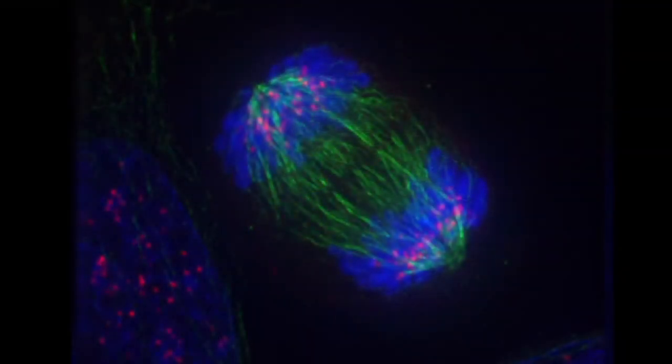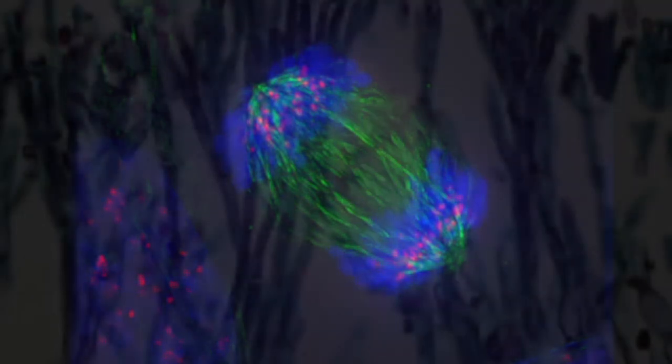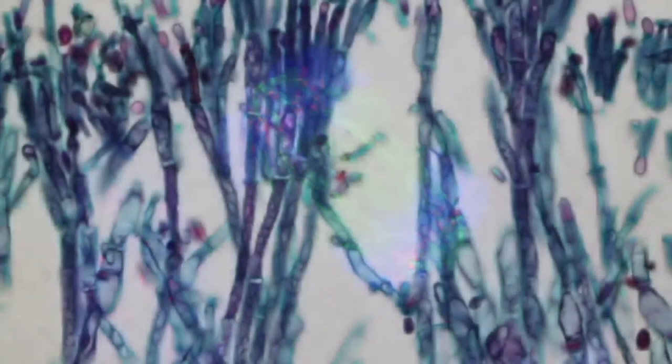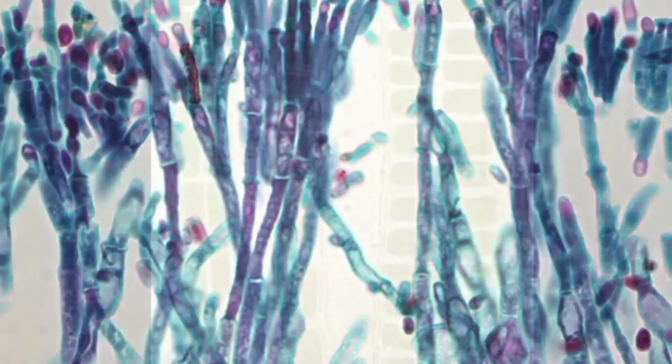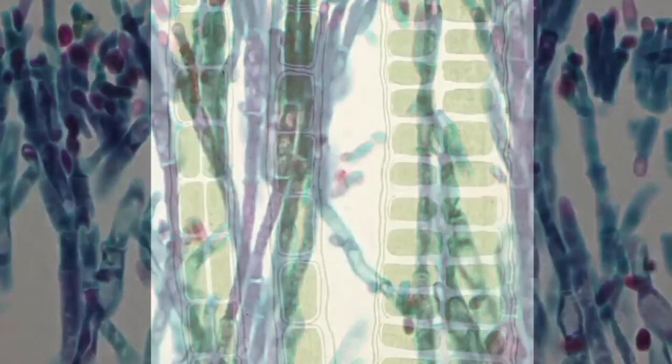In 1938, Otto Hahn and Fritz Strassmann discovered nuclear fission with radiochemical methods, and in 1939, Lise Meitner and Otto Robert Frisch wrote the first theoretical interpretation of the fission process, which was later improved by Niels Bohr and John A. Wheeler.